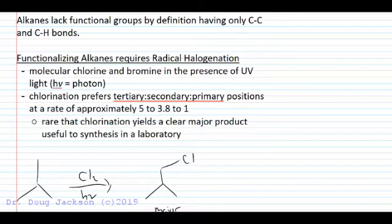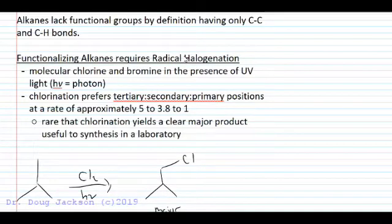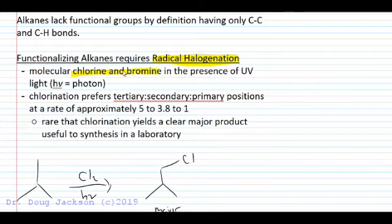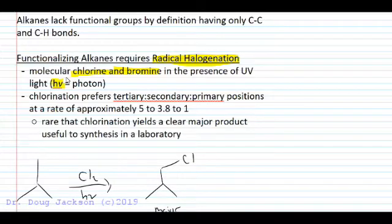Alkanes, by definition, lack functional groups. They only have C-C and C-H bonds. So we're going to look at a method for functionalizing these alkanes into alkyl halides by a process called radical halogenation. We're going to use molecular chlorine and bromine in the presence of UV light — using the symbol hν (Planck's constant times the frequency of a photon, the energy of a photon) as our reagents to do this reaction.